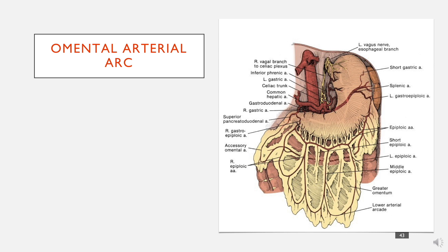The right and left gastroepiploic arteries come together to form the omental arterial arcade. The greater omentum runs from the stomach down to the transverse colon and back up, and contains an arterial arcade formed by these two vessels — essentially a network of arteries carrying a lot of blood. So trauma to the front of the stomach can lead to significant bleeding.